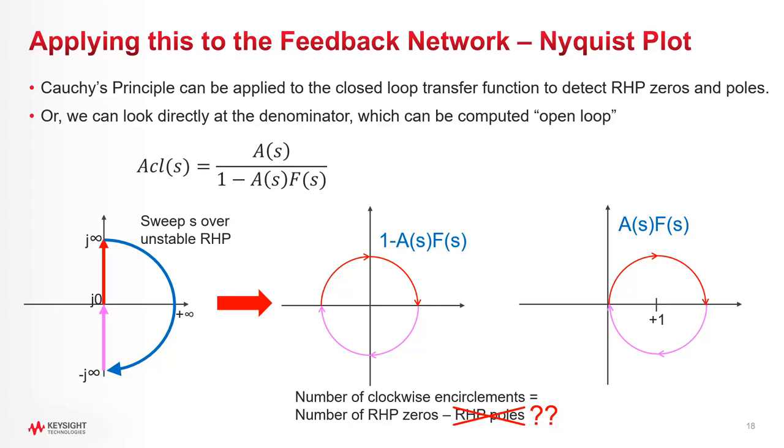But for now though, let's move forward with the big leap of faith that there are no unstable poles, and so the encirclements we get through the transfer function represent the right half plane zeros.